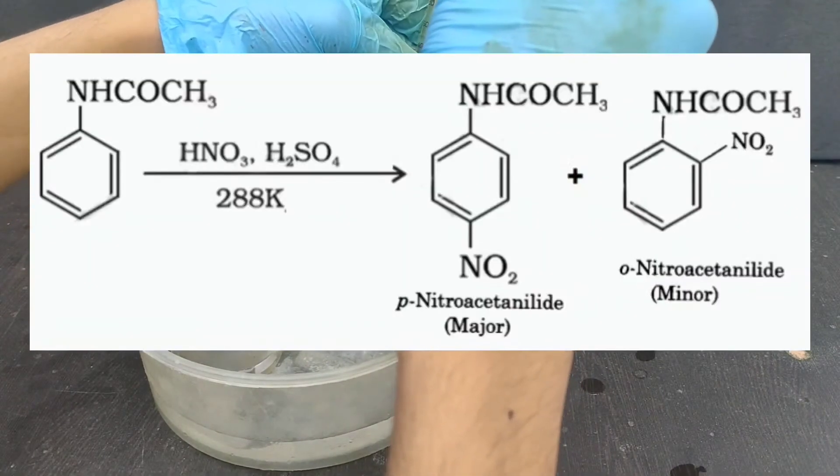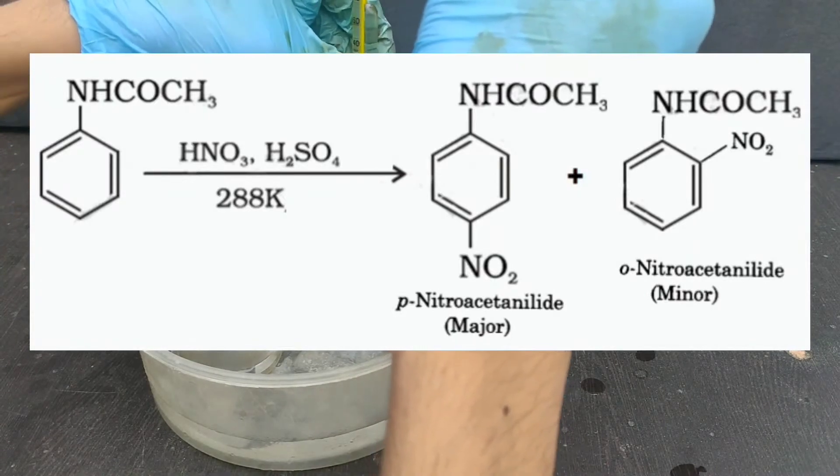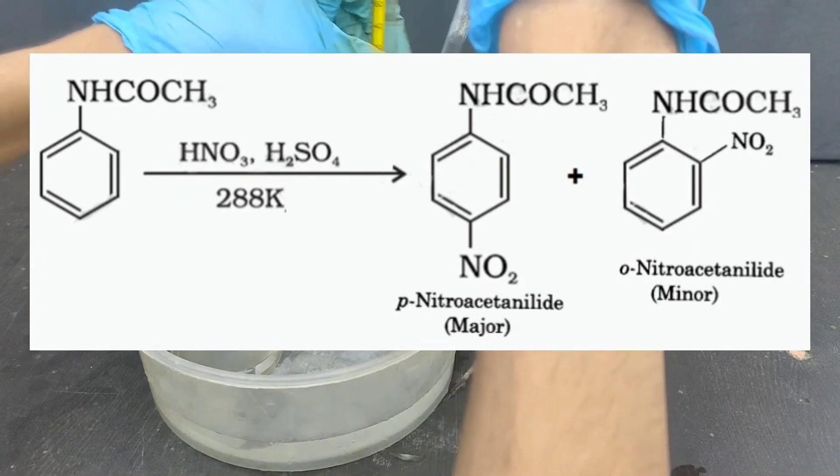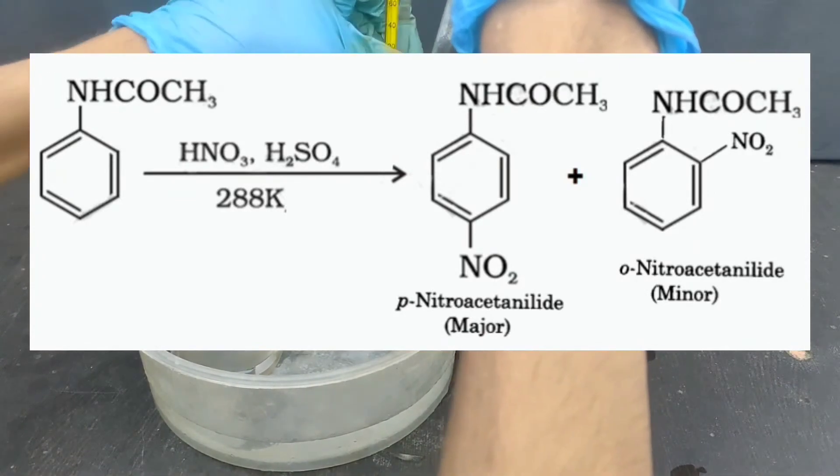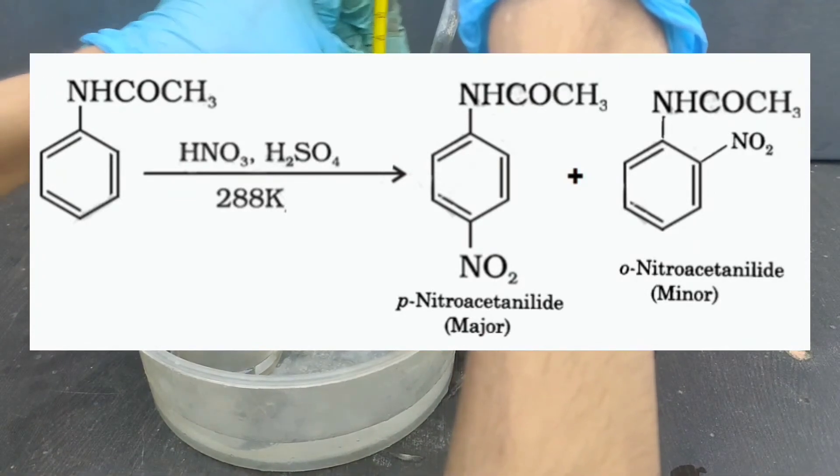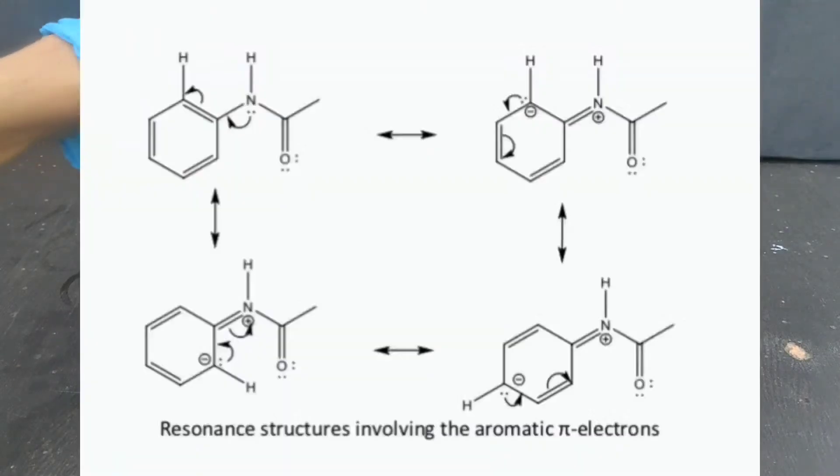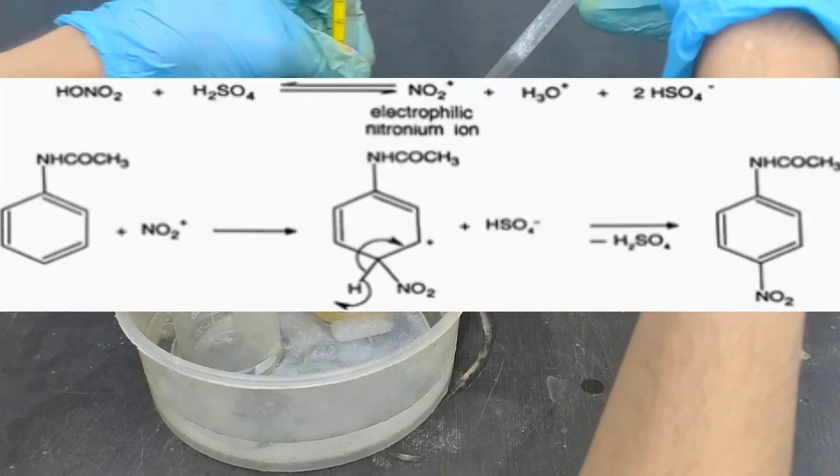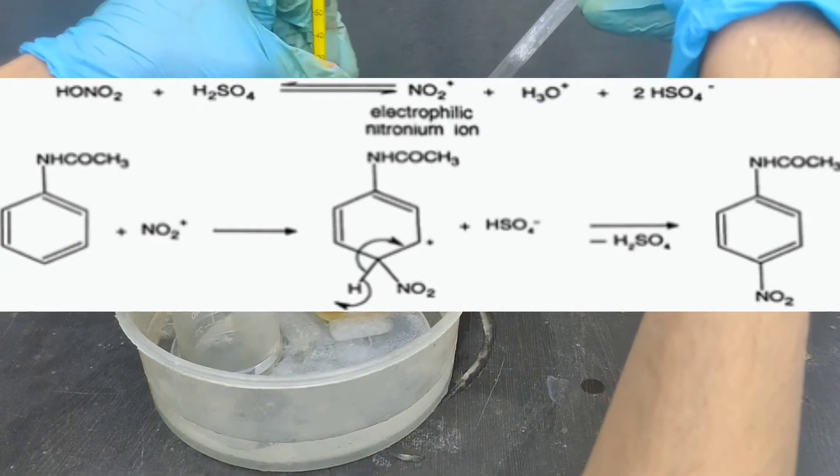What's happening here is acetanilide is getting nitrated at ortho and para positions. Low temperature favors the formation of para product. Acetanilide is ortho-para directing. Therefore, the electrophile nitronium ion attacks at ortho and para positions.